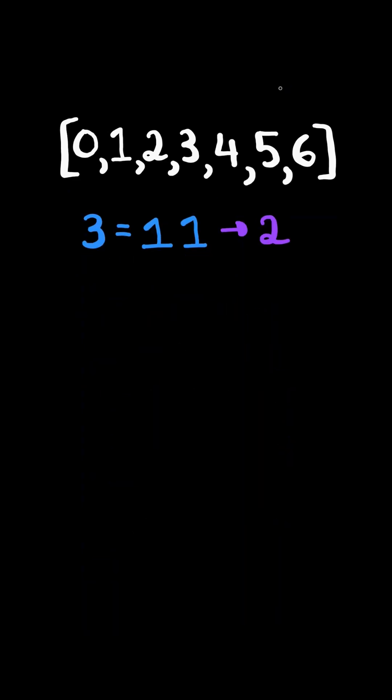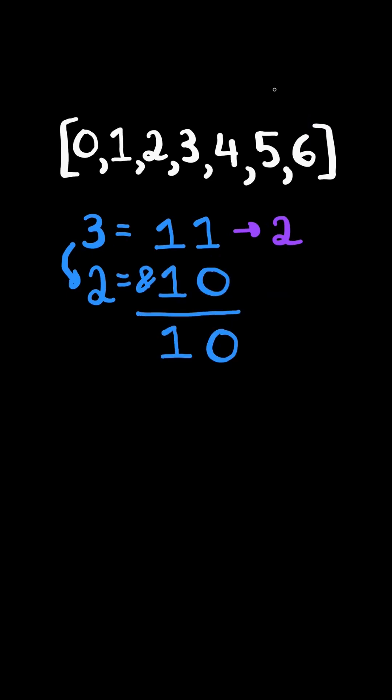How do we determine the number of 1 bits in the representation? The algorithm to do so is we first subtract 1 from the number, and consider its binary representation, and perform a bitwise AND operation. This will remove the lowest set bit.